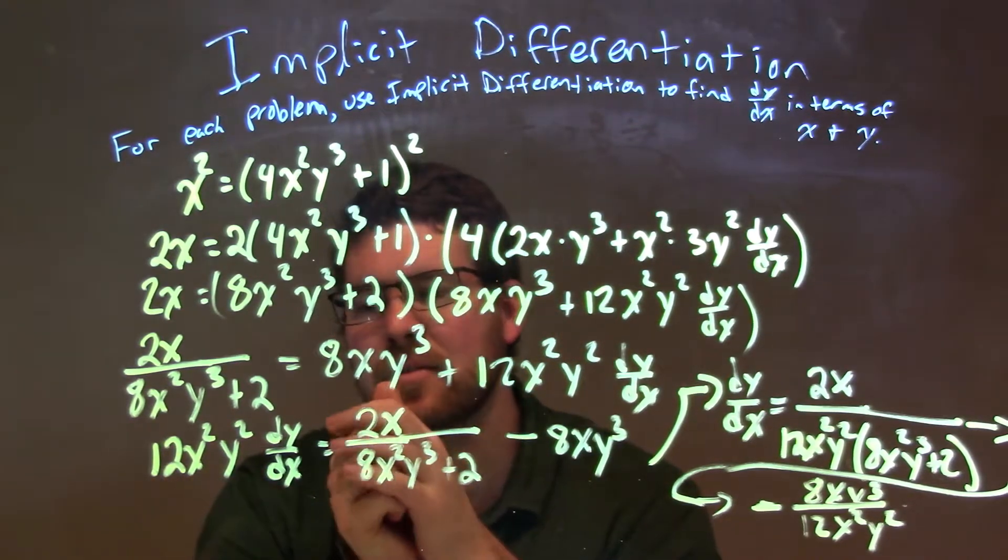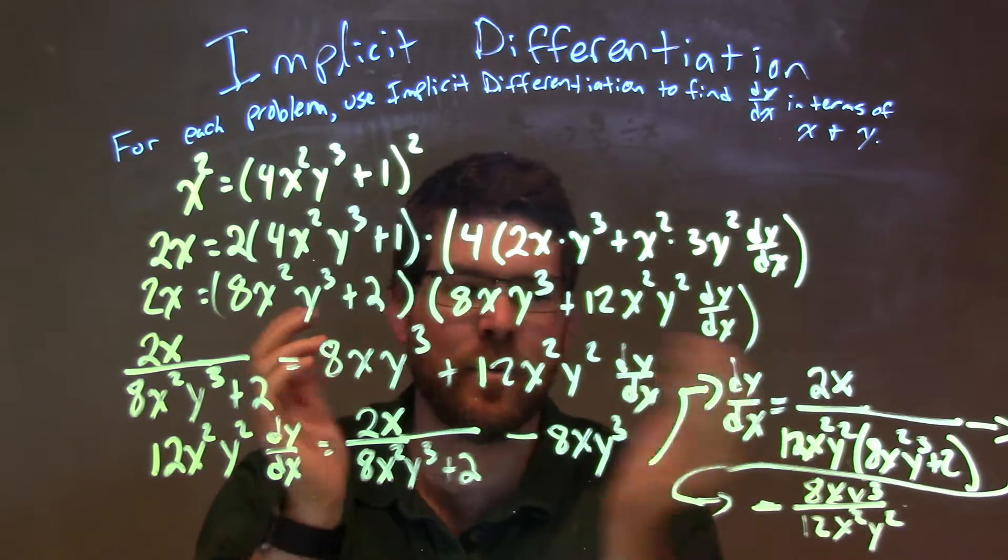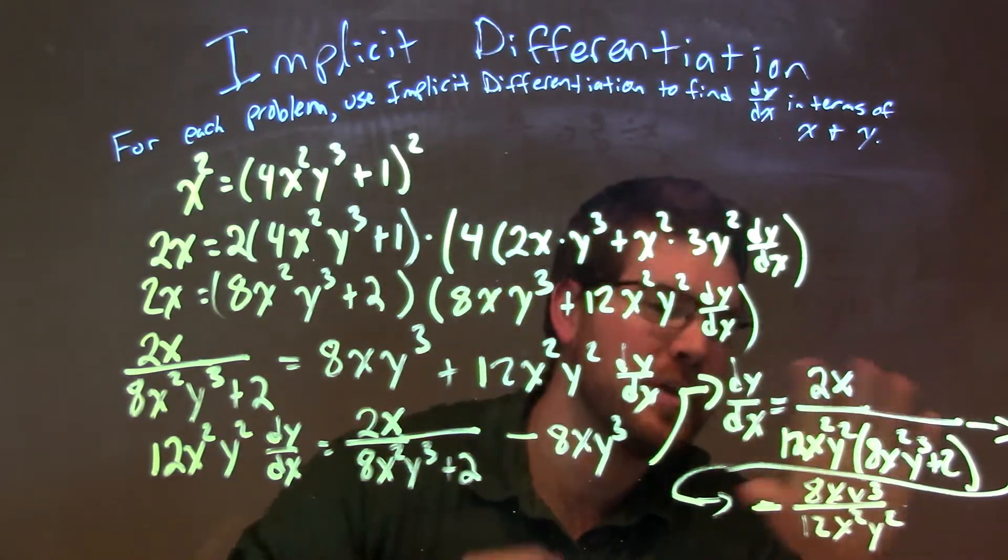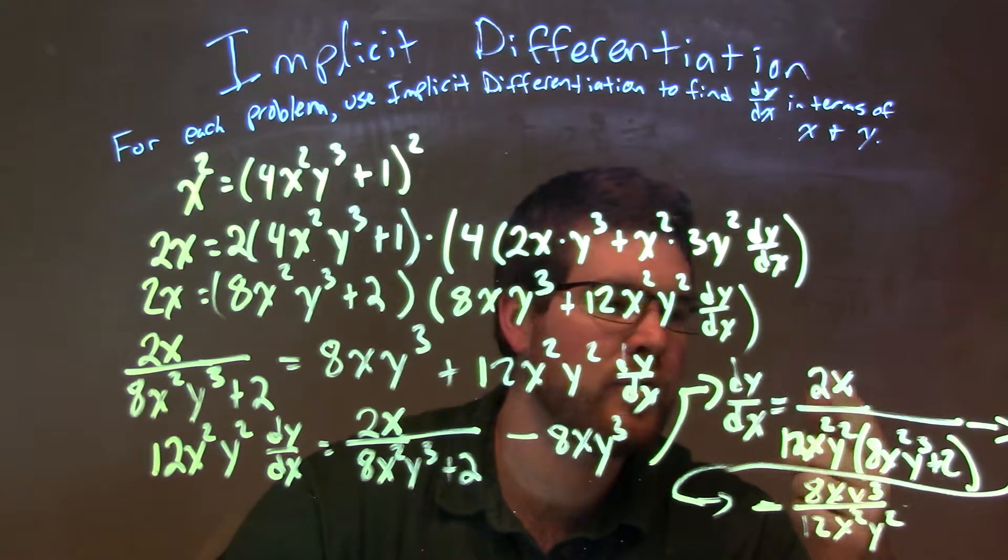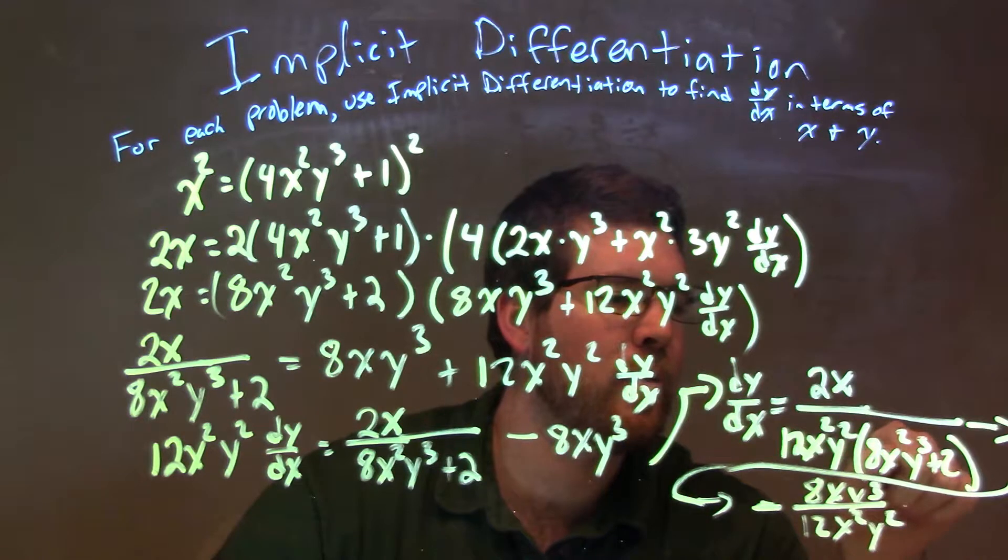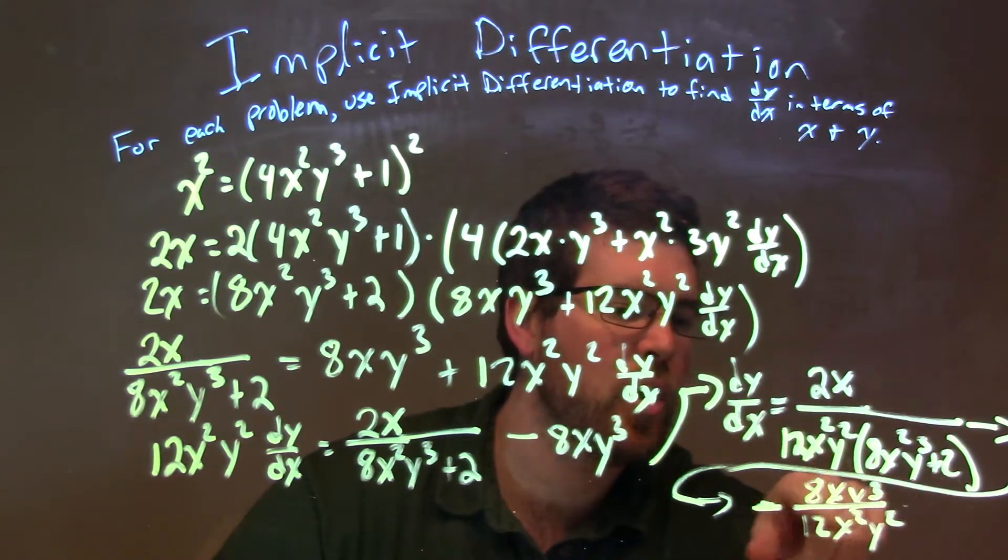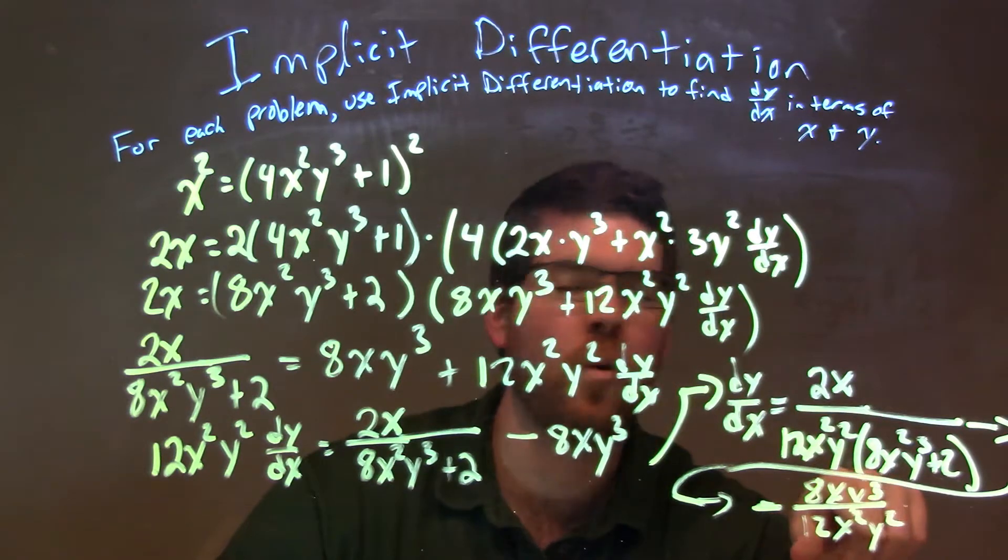Then I divided by this 12x squared y squared to both sides, gave me dy/dx, which comes all over here. And hopefully you can see it put together, but our final answer is dy/dx equals 2x over 12x squared y squared times 8x squared y to the third plus 2, minus 8xy to the third over 12x squared y squared.